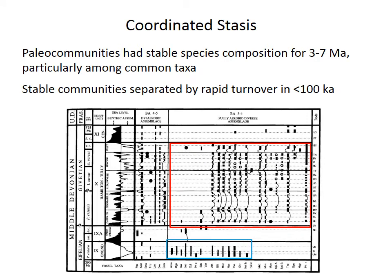The fossil record suggests that paleo-communities are actually quite stable, at least in terms of species presence and absence, and especially for the common species within a community. This stability lasts for a few million years before being restructured fairly rapidly, maybe in a hundred thousand years or less. This observation has been called coordinated stasis.